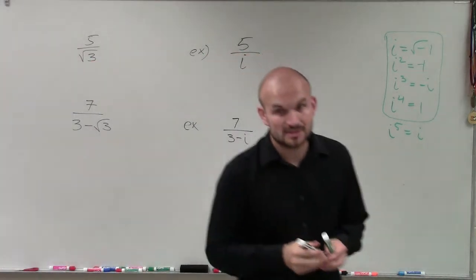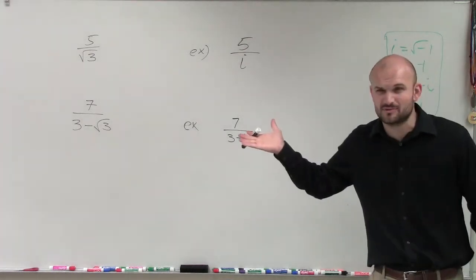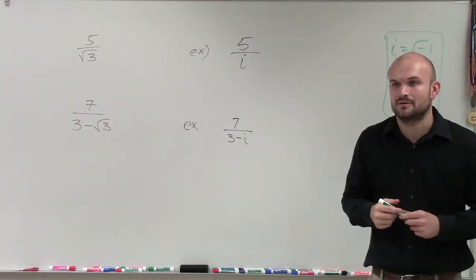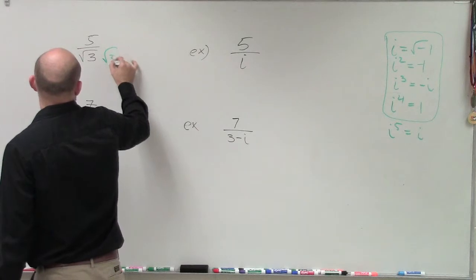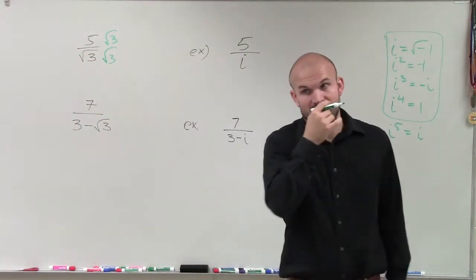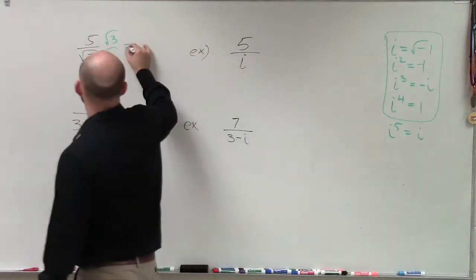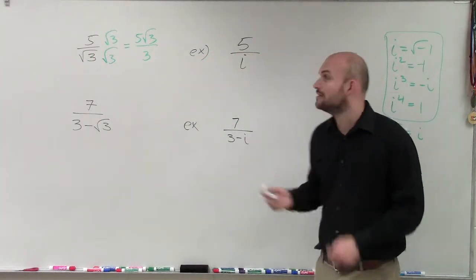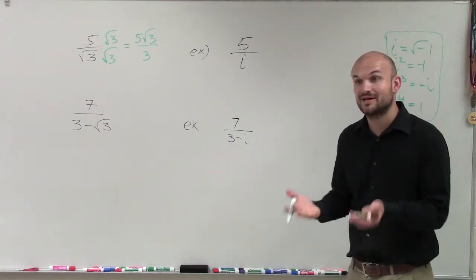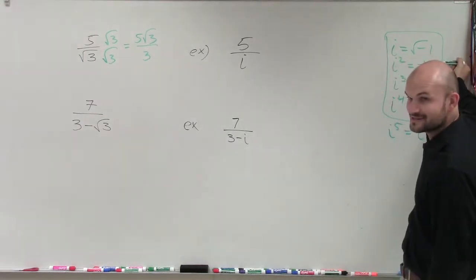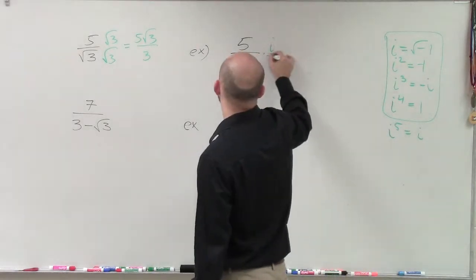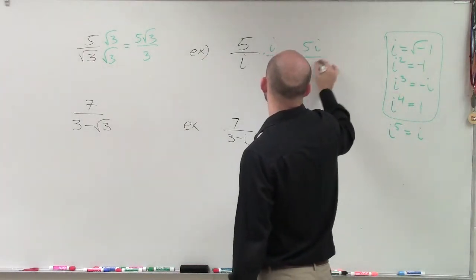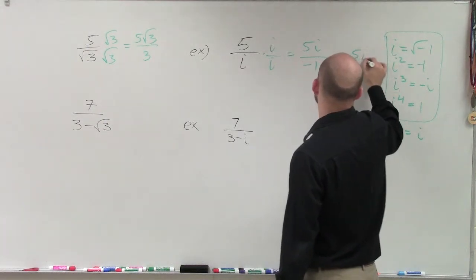For 5 over i, we multiply top and bottom by i because i times i gives i squared, and i squared is negative 1. Since we multiply the same number on top and bottom, we have equivalent fractions. So 5 over i becomes 5i over negative 1, which equals negative 5i.